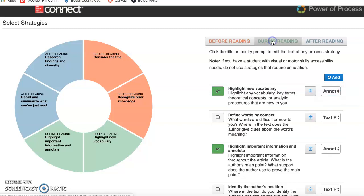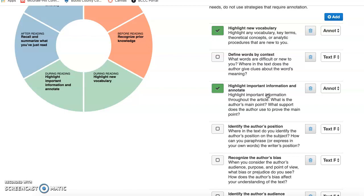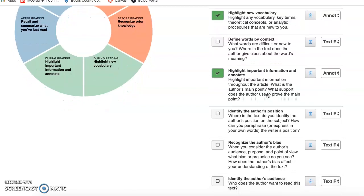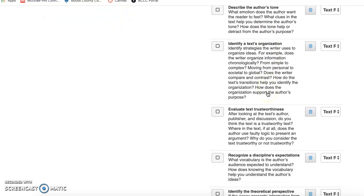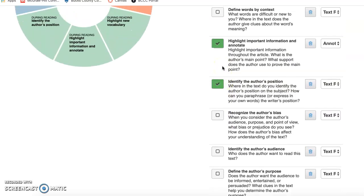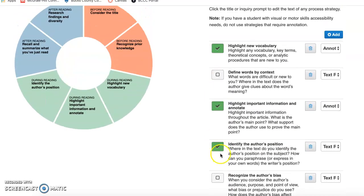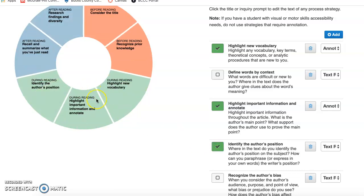During the reading, I want my students to highlight any new vocabulary. I also want them to highlight important information and annotate, and then I want them to identify the author's position, which I believe is important, especially when we're talking about sociology articles. And you'll see here when you add a new strategy, it's going to adjust the wheel.